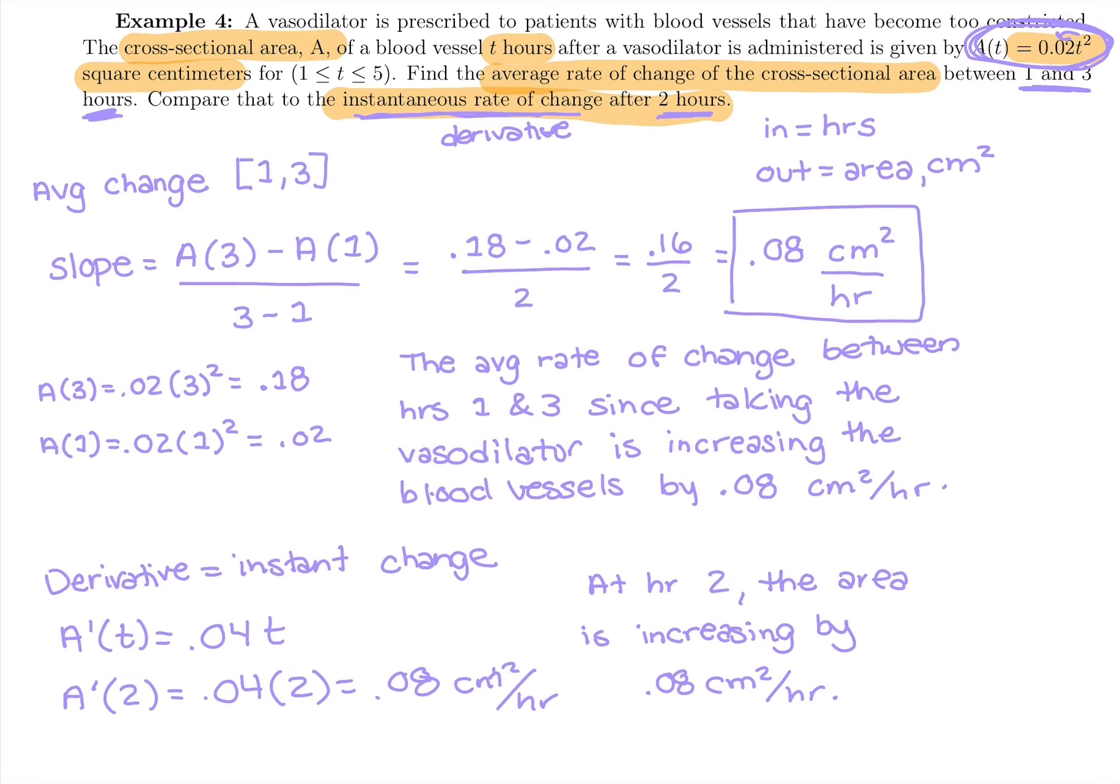If between one and three hours, on average, it was increasing by 0.08 centimeters squared per hour, I'd be very surprised and concerned if we got like a negative answer for our derivative at two hours. It should probably be right around that average rate of change for that instantaneous change at two hours. But some good practice finding average means slope, instant means derivative, and plugging in and using two units to interpret the answer.